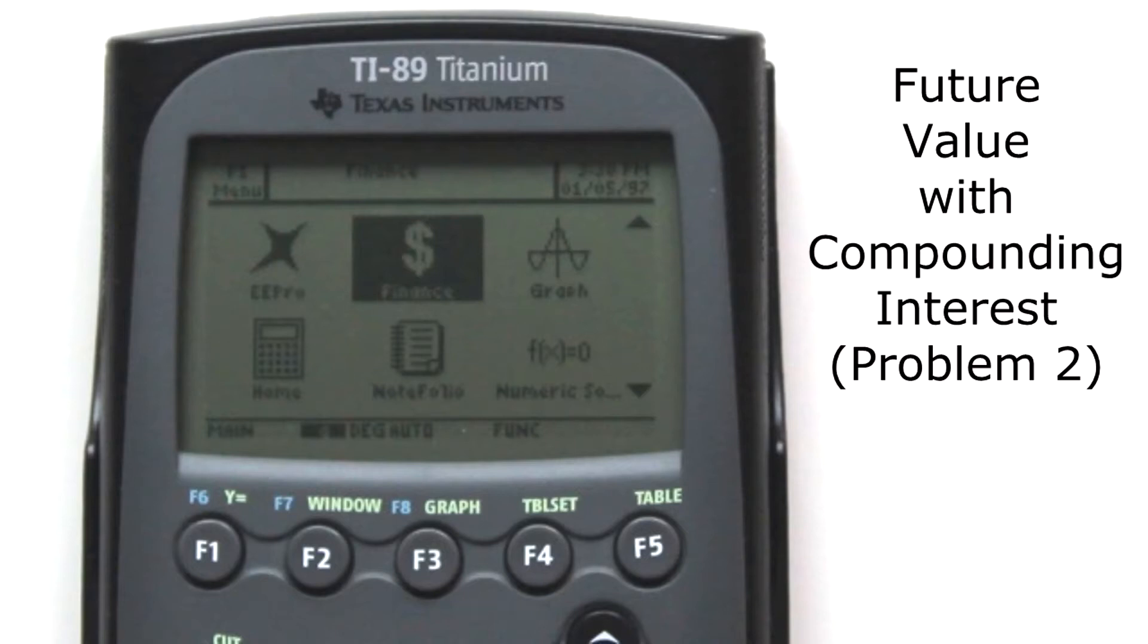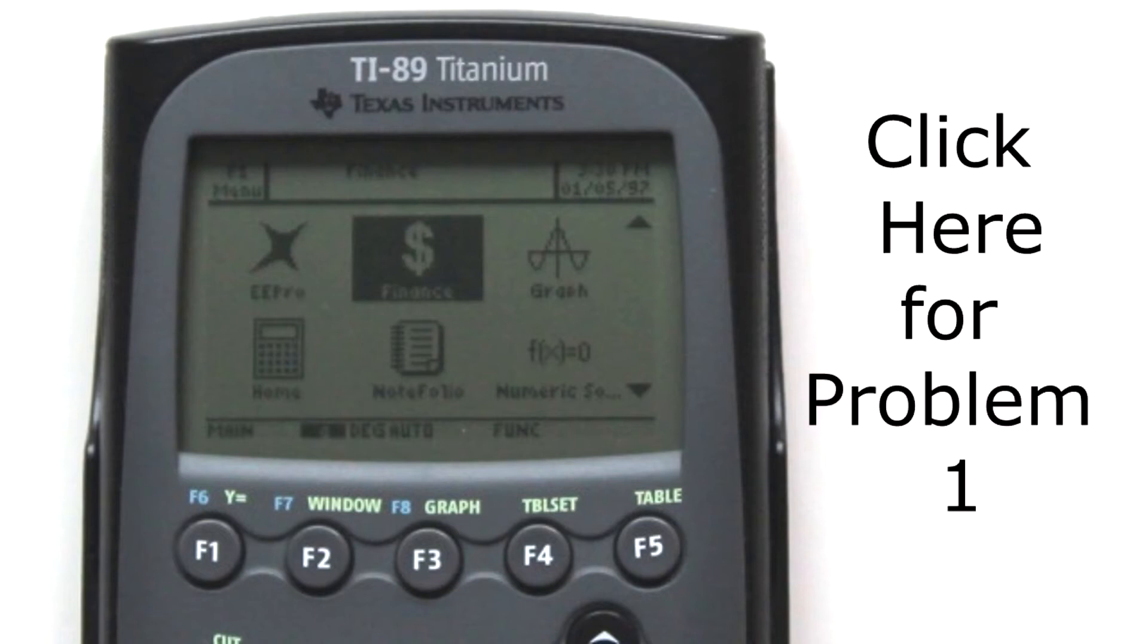This is Problem 2 of Future Value with Compounded Interest using the Finance App on the TI-89 Calculator. To see a more detailed explanation of the Finance App for the TI-89 Calculator, you need to go to Problem 1. Click here for Problem 1.